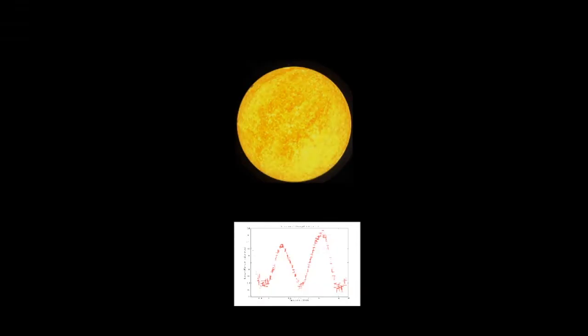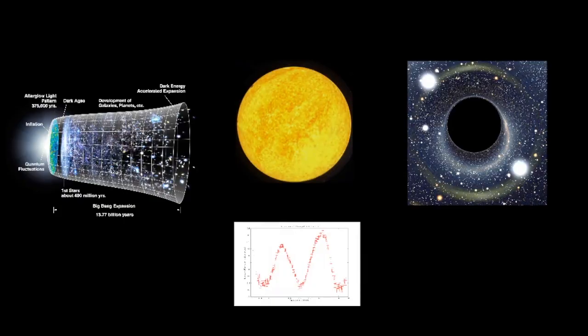Almost everything we know about astronomy today, from the Big Bang to the existence of black holes, we know because of Cepheid variables. They are perhaps the most important type of star in the entire universe.